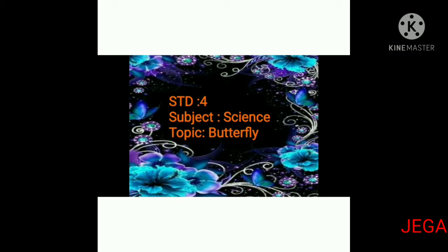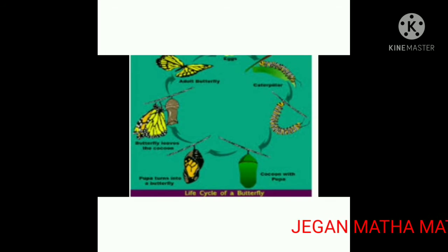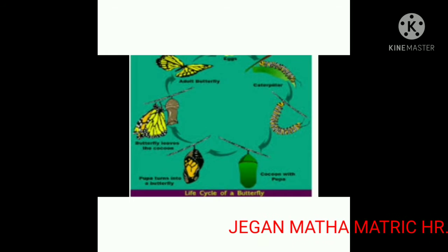Hi students, today I am going to discuss about fourth standard science subject, a new topic: butterfly. In butterfly, there are different developmental stages like egg, larva, pupa, and adult. Each stage is different. The process in which a butterfly becomes an adult is called metamorphosis.